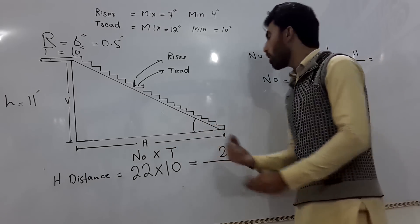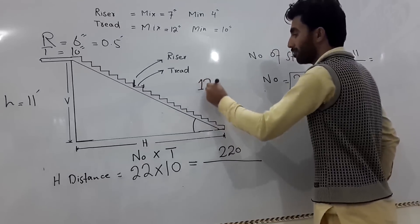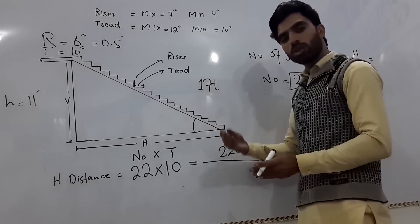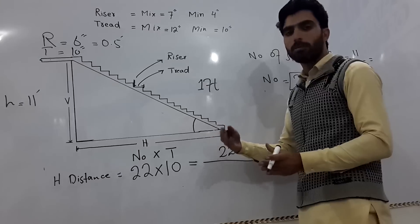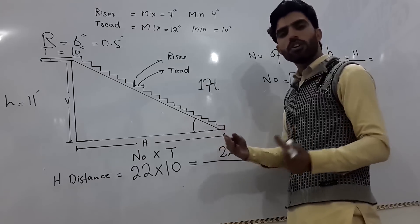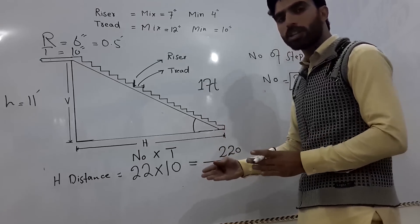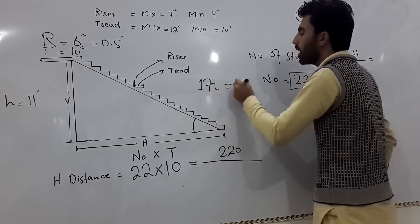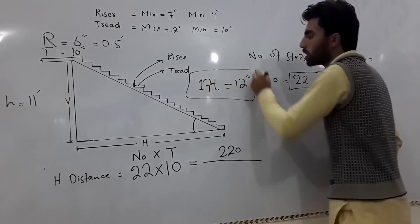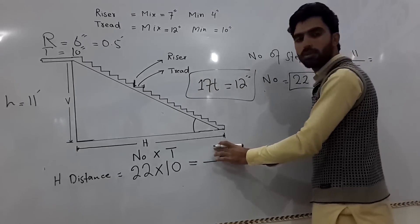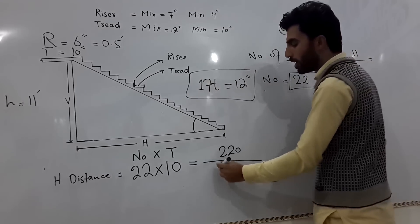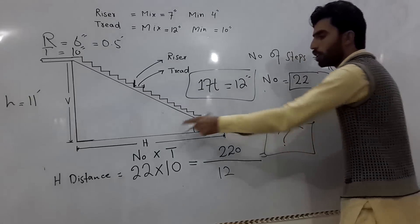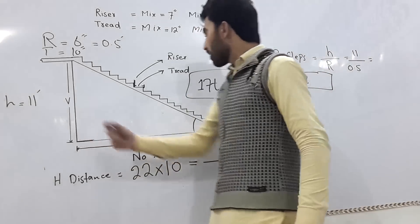To convert 220 inches to feet, divide by 12. So 220 inches divided by 12 gives you the required horizontal distance in feet. That is the horizontal distance you will need for your stair design.